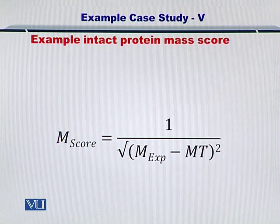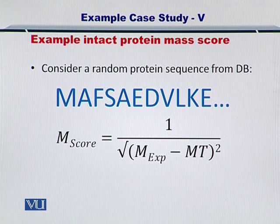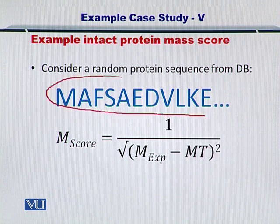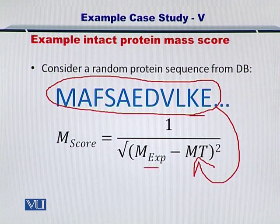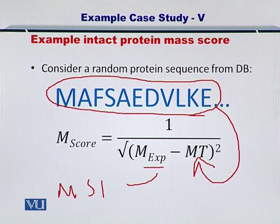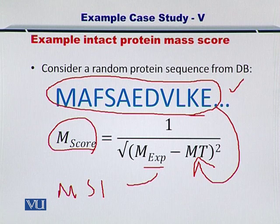Let's take a look at an example protein. This is the protein we are working on in this case study. You can simply compute the molecular weight of this entire protein by adding up the molecular weight of each amino acid and plug this value as theoretical mass, and obtain the experimental mass from your MS1. In this way you can score all such proteins and the ones with a large score are bound to be close to your protein that you are trying to identify.